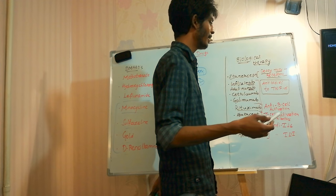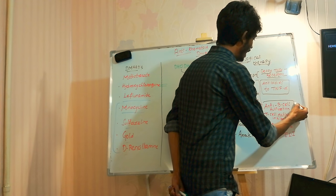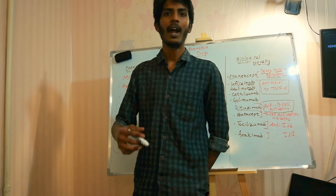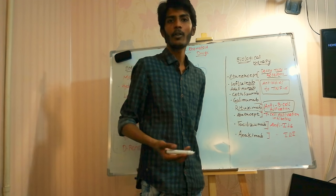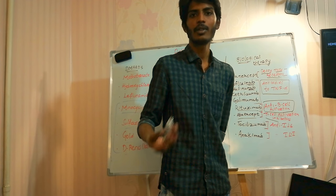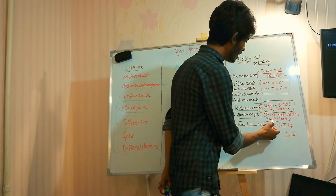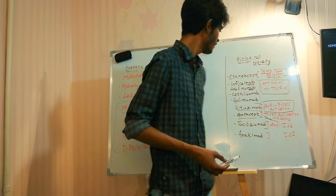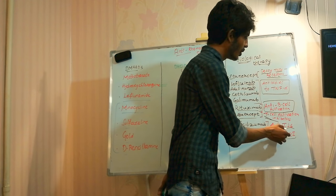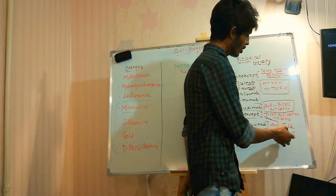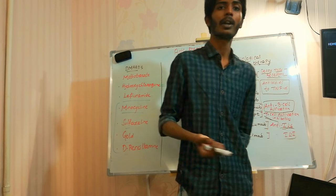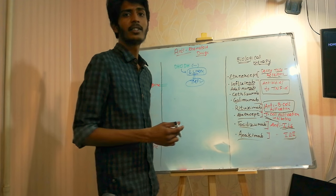Rituximab is an anti-B cell monoclonal antibody — by preventing B cell activation, it stops plasma cell formation and further synovial macrophage activation. Abatacept is a T cell activation inhibitor, since T cells also infiltrate the synovium. Finally, tocilizumab and anakinra are anti-interleukin drugs that inhibit interleukin-6 and interleukin-1, respectively — both cytokines involved in the progression of rheumatoid arthritis. This concludes anti-rheumatoid drugs.